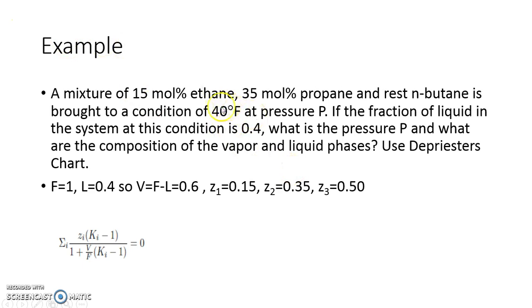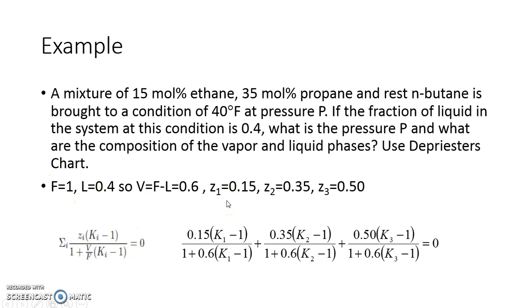Since we know the temperature which is 40, what we can do is this equation can be first written with all the given numerical values which is this. If I convert this into numerical values, I know Z1 0.15 K1 minus 1, 1 plus V which is 0.6 K1 minus 1, plus this is for the second component, this is for the third component, and equal to 0.